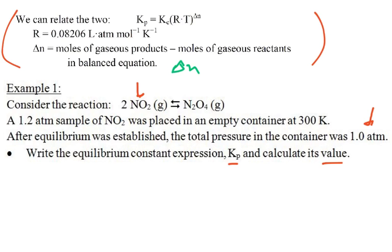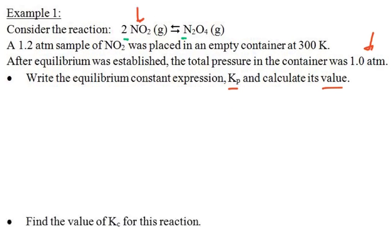What is delta N? So moles of our product minus moles of our reactant. So here we have a 1, here we have a 2. So this is 1 minus 2. So the delta N is negative 1, negative 1 moles. And we'll come back and see that later. Let's go.